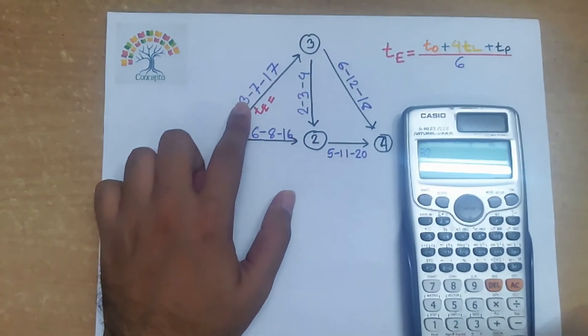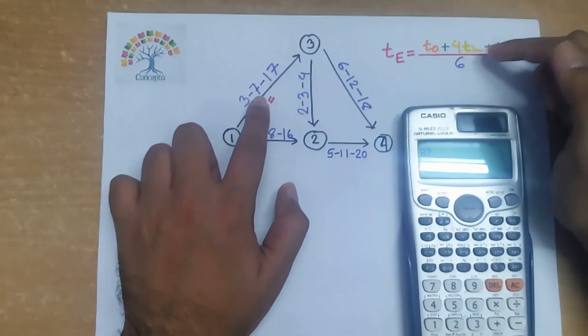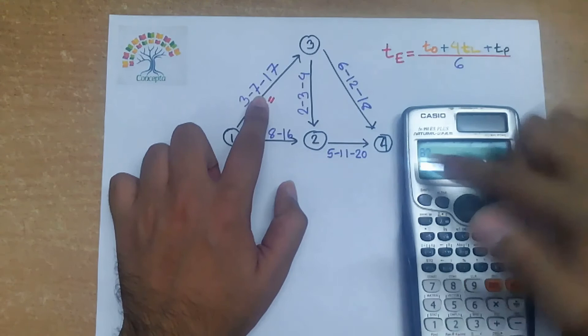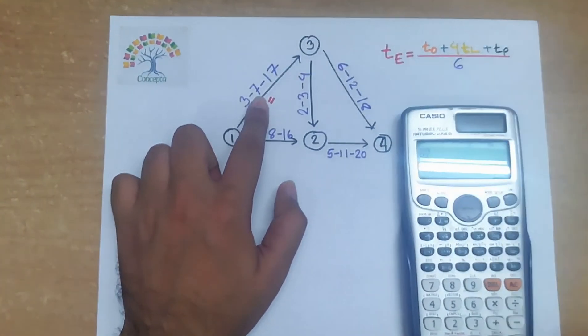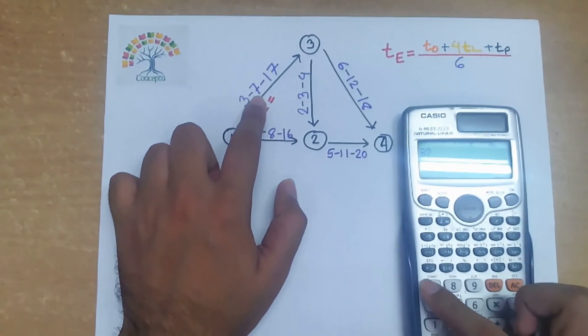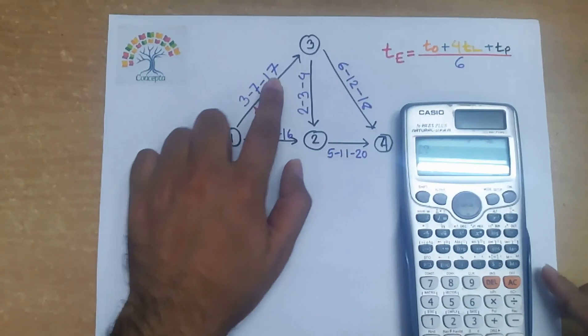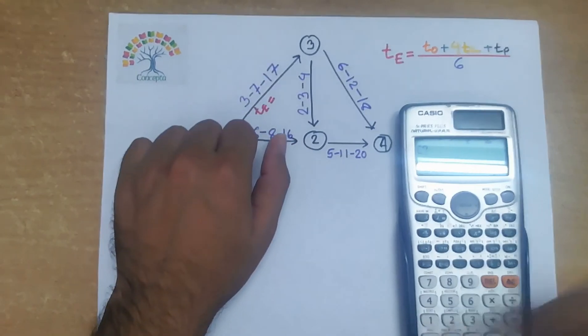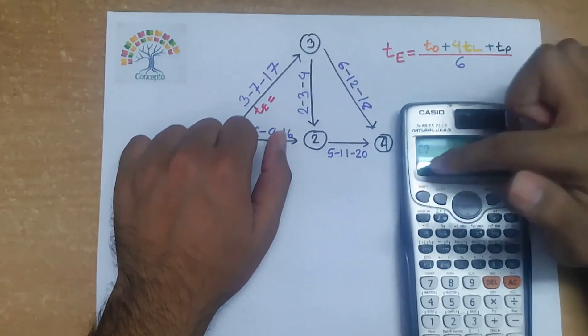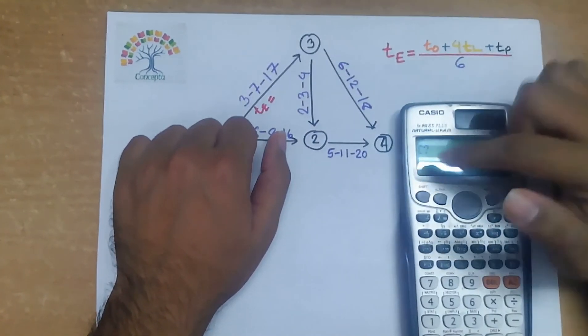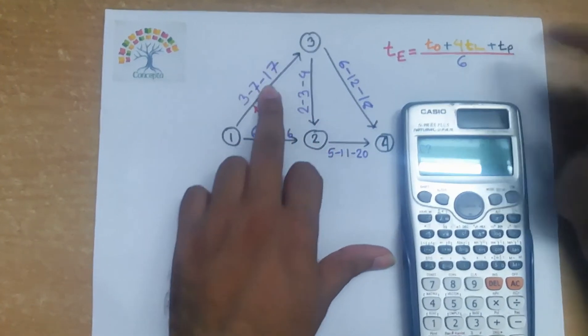Then comes b equals to what. Then b will be 7, because tl is put instead of, b is put instead of tl. That means b represents tl, so b equals to 7. Then we will put 7. Then again comes c equals to what. c equals to will be 17, because we